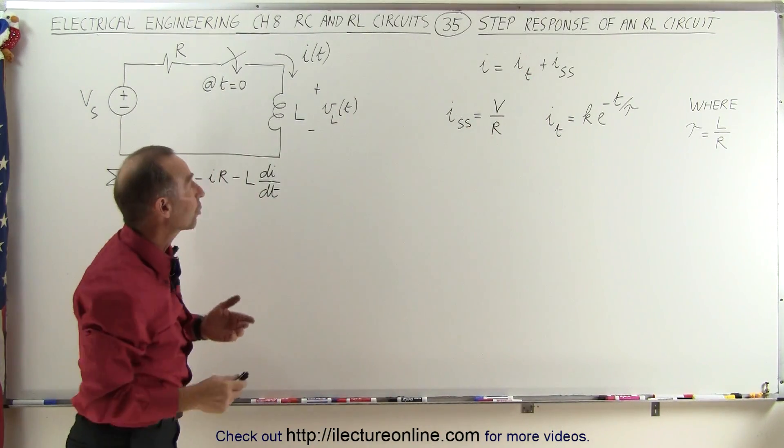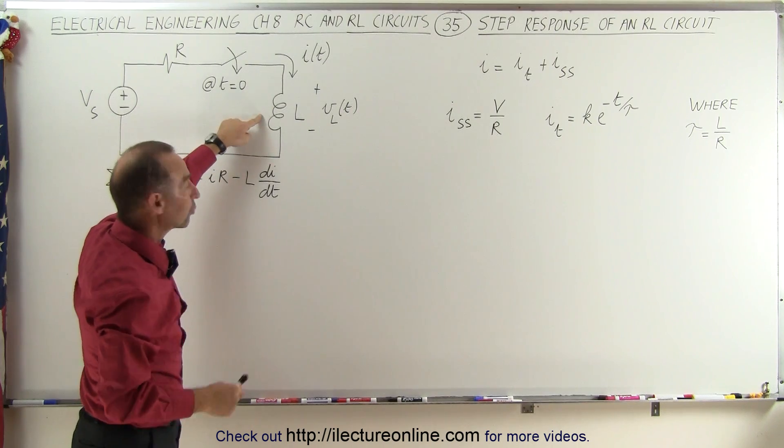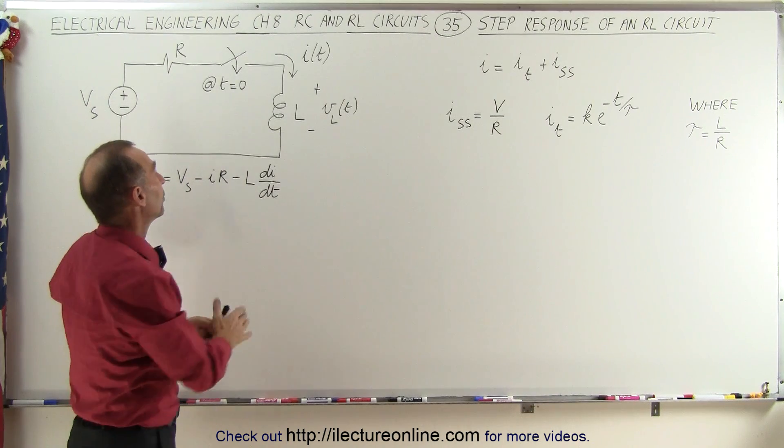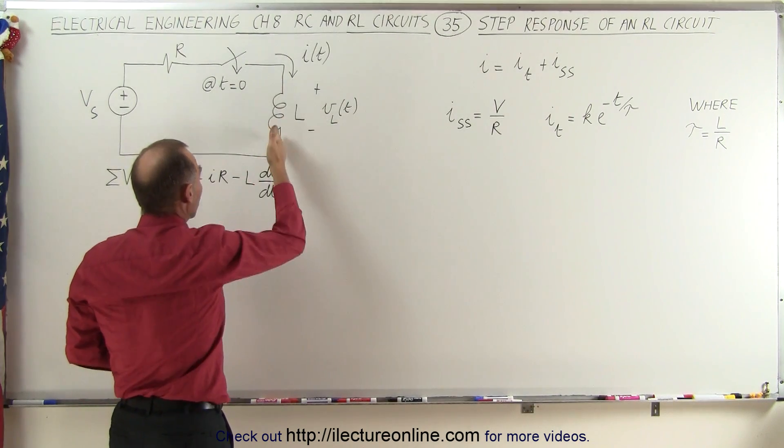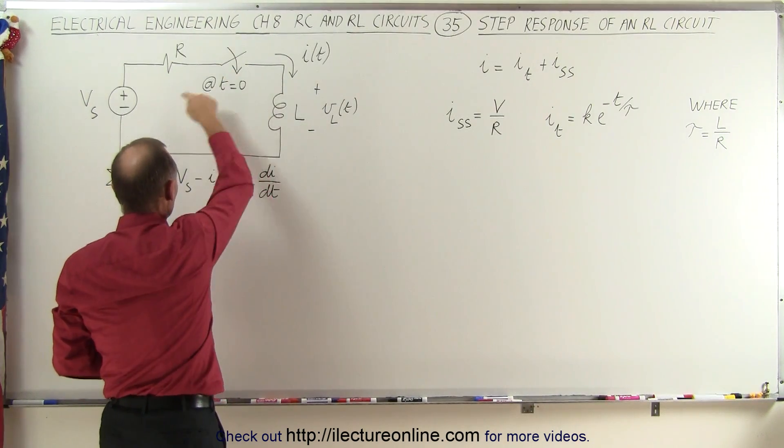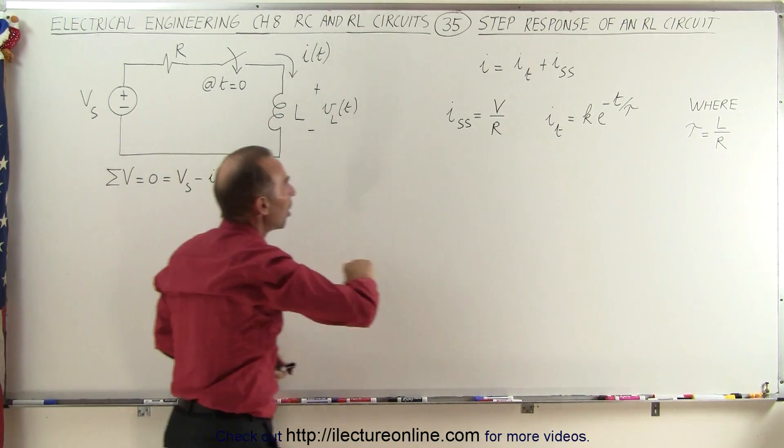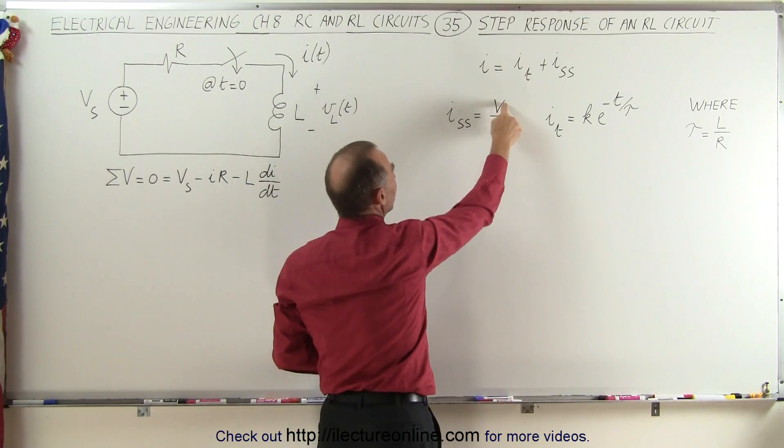The steady state current will be such that the inductor no longer opposes a change in the current, because the current stopped changing. At that point the inductor simply becomes a short circuit, and then the current in the circuit is simply determined by V over R, Ohm's law. So the steady state current will be V over R.